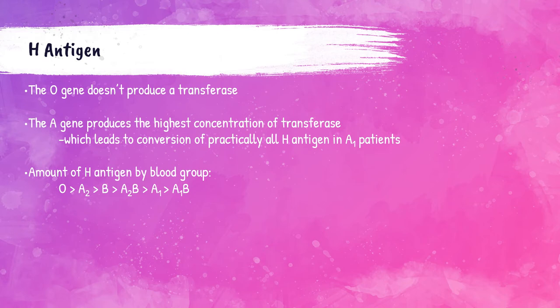The A gene tends to have a higher concentration of transferase compared to the B gene, leading to conversion of practically all of the H antigen on the red blood cell surface to A1 antigen sites. The amount of H antigen for each blood group, from highest to lowest, is: group O, then group A2, then group B, then group A2B, then A1, and lastly A1B. You need to know this order — if asked which blood type has the most or least H antigen, you should be able to answer.